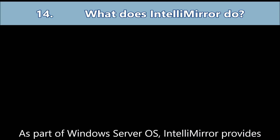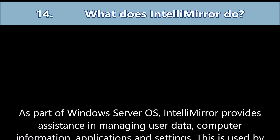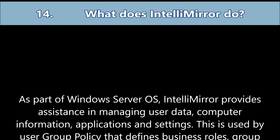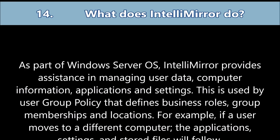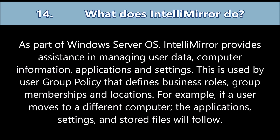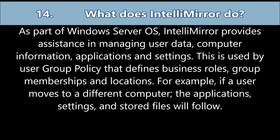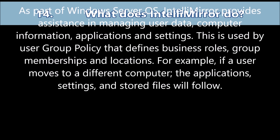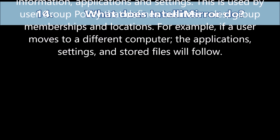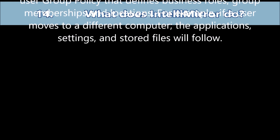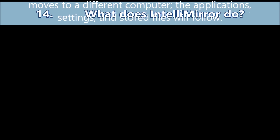Question number fourteen: What does IntelliMirror do? As part of the Windows Server operating system, IntelliMirror provides assistance in managing user data, computer information, applications, and settings. This is used by user group policy that defines business roles, group memberships, and locations. For example, if a user moves to a different computer, the applications, settings, and stored files will follow.